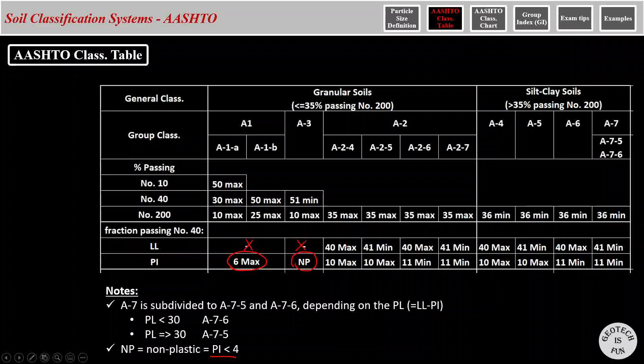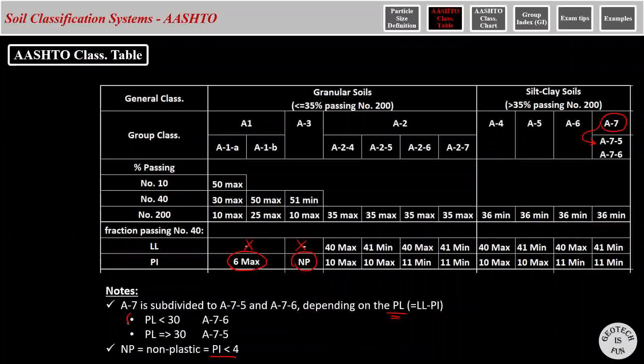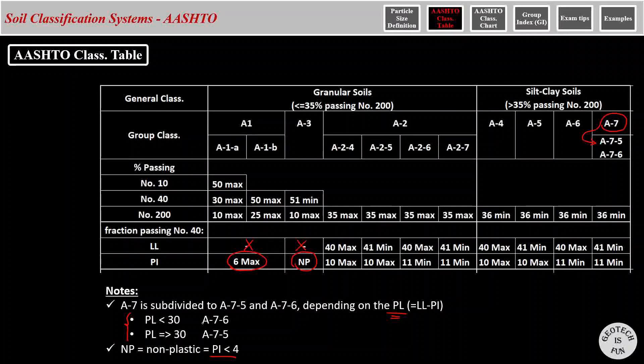And finally, all the way at the right side of this table, you see A-7 is divided to A-7-5 and A-7-6. This division is done based on plasticity limits. And here are the definitions. Plasticity limit of less than 30 is A-7-6 and plasticity limit of equal or more than 30 is A-7-5.